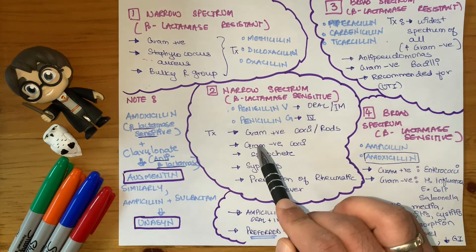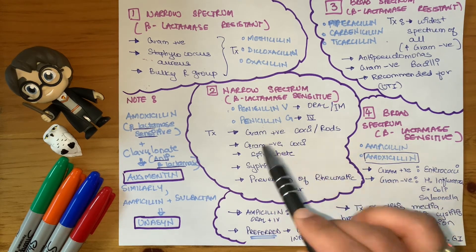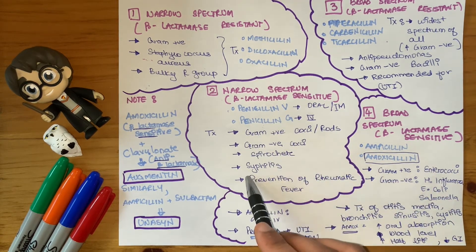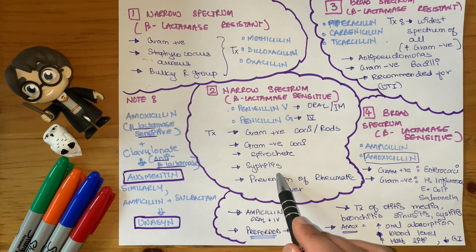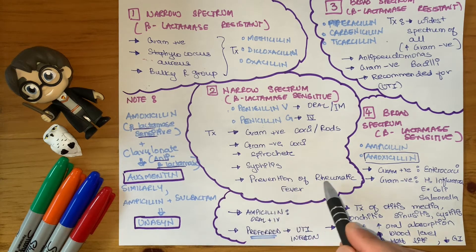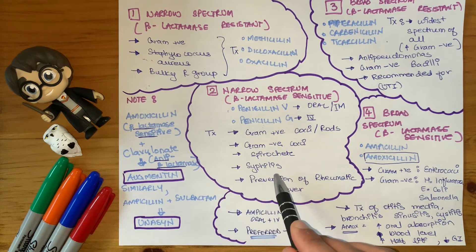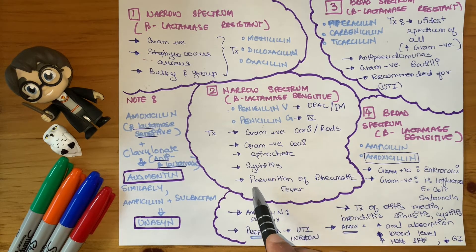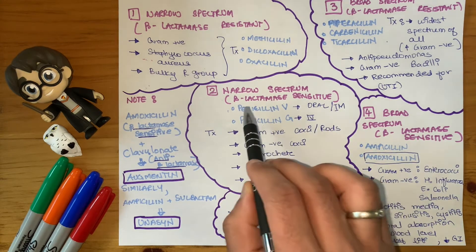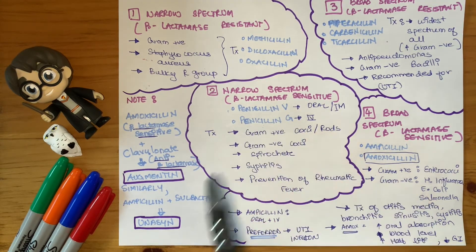What do these narrow spectrum drugs treat? They are known to treat syphilis and to prevent rheumatic fever — treatment of syphilis and prevention of rheumatic fever by penicillin V and penicillin G.